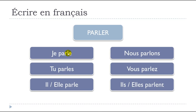So here we have 'je,' which means 'I' — 'je parle,' I talk, I speak. Then 'tu,' which is 'you' in the singular form — 'tu parles,' you talk, you speak. Then 'il' for the masculine form, meaning 'he,' and 'elle' for 'she.' Both share the same verb form: 'il parle,' 'elle parle.'